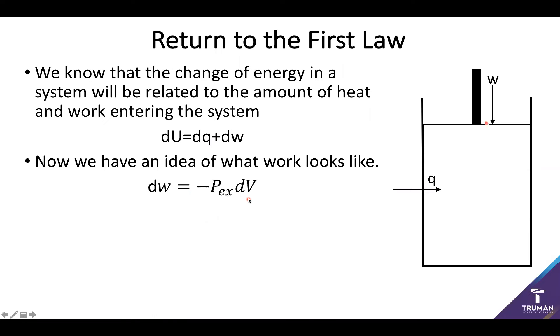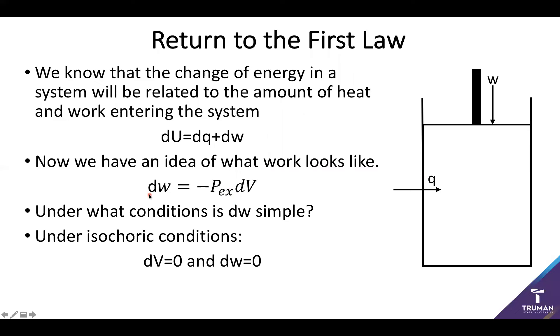However, if I'm trying to examine the change in energy and specifically the change in heat of the system, we want to try and make our work expression as simple as possible. So what conditions are going to make this simple? Turns out I already gave you the hint, isochoric conditions. Because what happens if we hold the volume change as constant? Well, then dV goes to zero. So then my work expression goes to zero and we get a beautiful set of conditions.